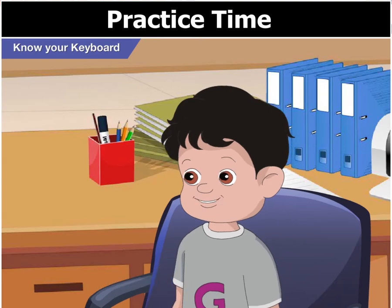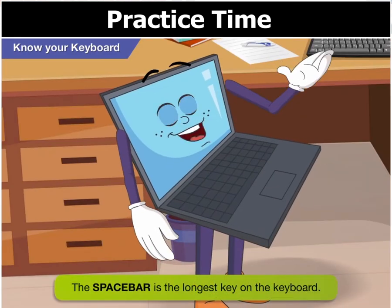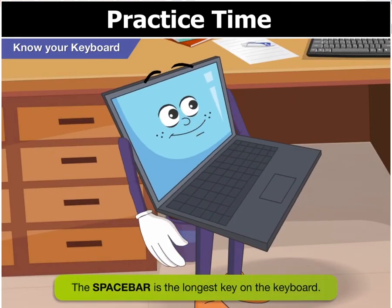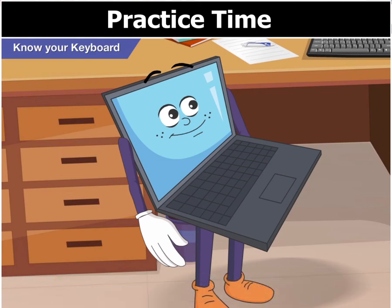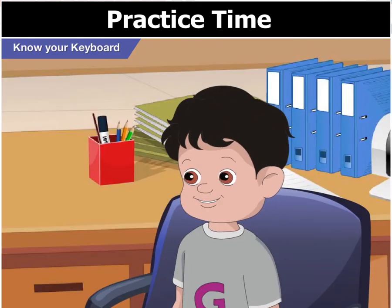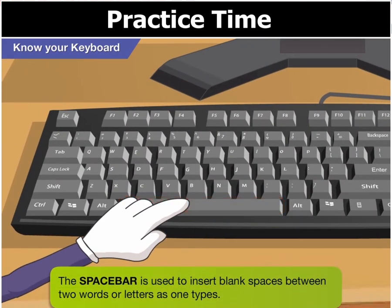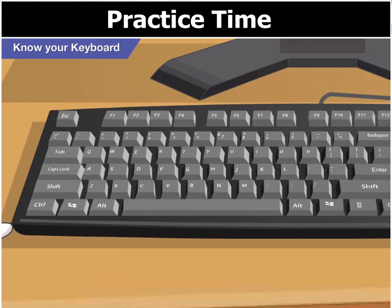What's that long key at the bottom? It has nothing written on it. The long key you see at the bottom of the keyboard is the space bar. The space bar is used to insert blank spaces or gaps between two words or letters as you type.